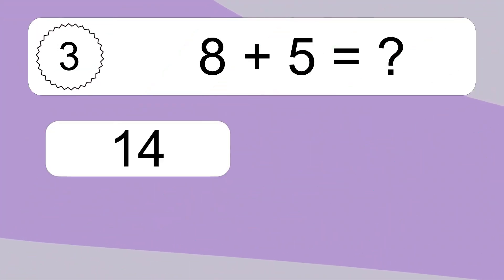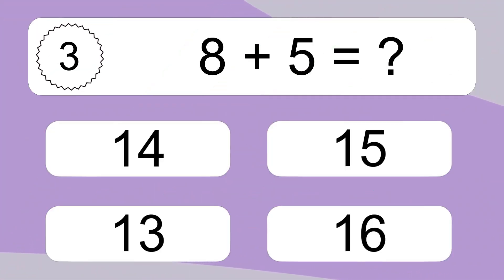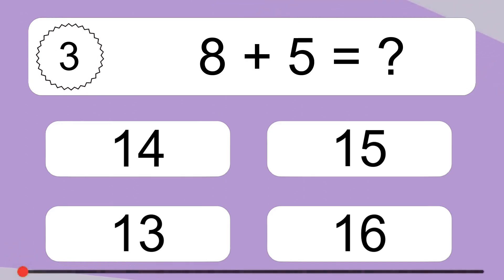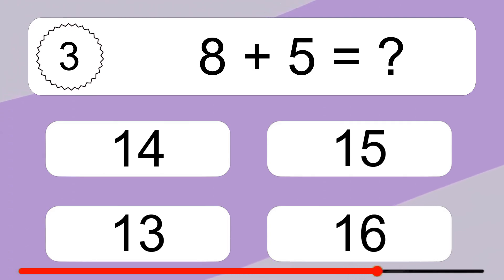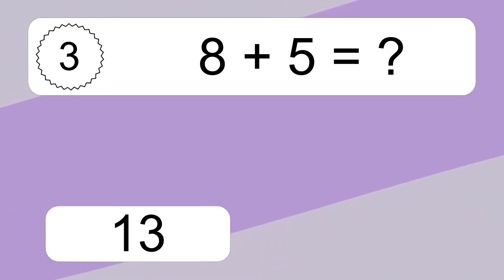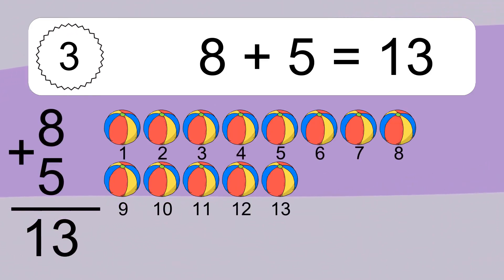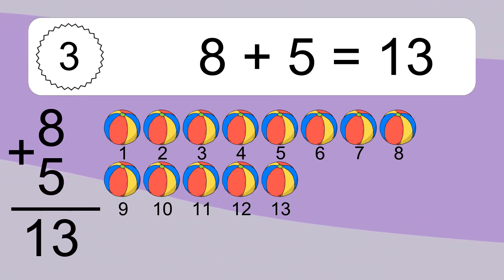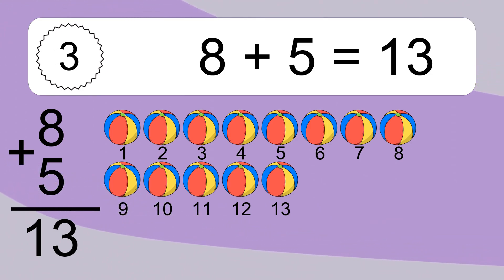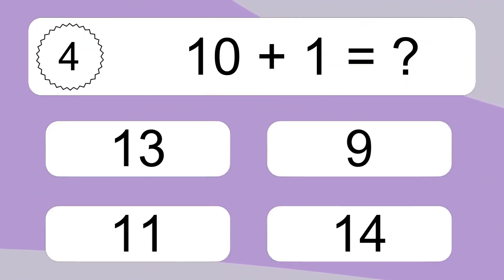8 plus 5 equals what? 8 plus 5 equals 13. Let's count it. 1, 2, 3, 4, 5, 6, 7, 8, 9, 10, 11, 12, 13.